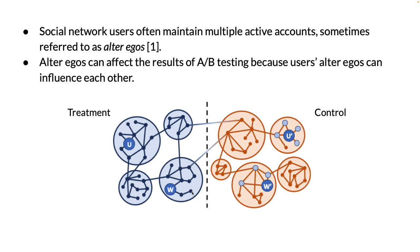For example, for a single user, one alter ego account may be assigned to treatment, such as account U right here, while another is assigned to control, like account U prime right here. Those two accounts can affect each other even though they are not connected in the social graph. And if you're in a network setting, peer effects can magnify the bias. In this example, we can see that U prime is receiving treatment from its alter ego and is affecting its neighbors, these light blue nodes.